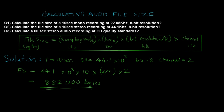Question number 3 asks: calculate the file size for a 60-second stereo audio recording at CD quality standards. CD quality standards means the sampling rate is 44.1 kilohertz, the bit resolution is 16 bits, and the channel is always stereo, so channel = 2. These are the CD quality standards you must always apply when this type of question is asked.